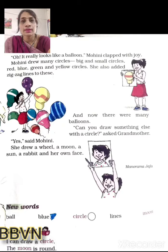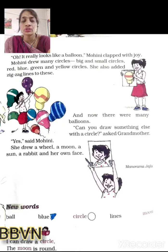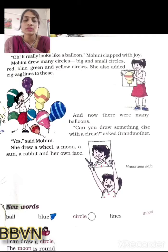So aapko samajh mein aaya ki sabse pehle daadi ma ne kya banaya? Ek circle banaya. Phir circle ko ball banaya — ball kaise banaya? Usme three lines add kar di. Phir un three lines ke saath unhone zigzag lines bhi add kar di, toh woh kya ban gaya? Balloon. Ab Mohini ne jaise hi dekha, usne bhi circle banaya, ball banaya, balloons banaaye — aur ab usne bahut saare chote bade circles banaaye. Red, yellow, green, blue — bahut saare colors the. And now there were many balloons. Usne jitne bhi circle banaaye, unka balloons bana diya.